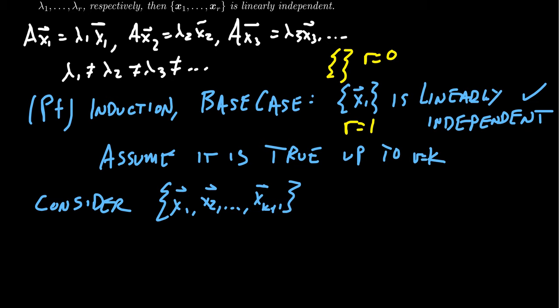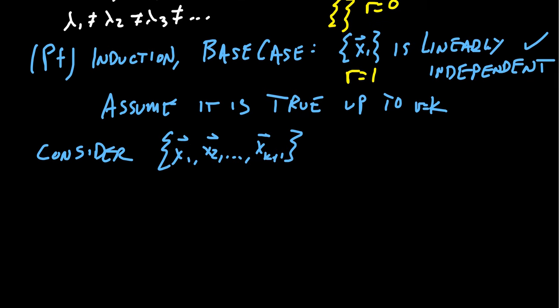So what happens in that case? If we're interested if something is linearly independent or not, we look at the homogeneous system. So we want to consider C1 X1 plus C2 X2, and we take this sum all the way up to C K plus one, X K plus one. And suppose this is equal to zero. So we want to consider this equation. If the set of vectors is linearly independent, then there should be only the trivial solution to this homogeneous system of equations.